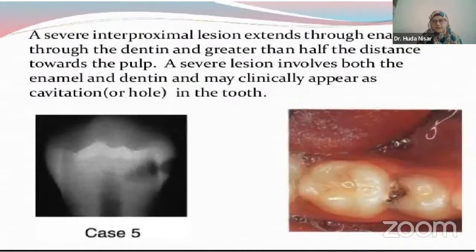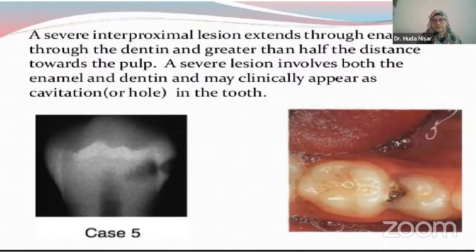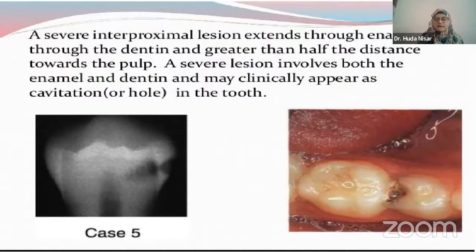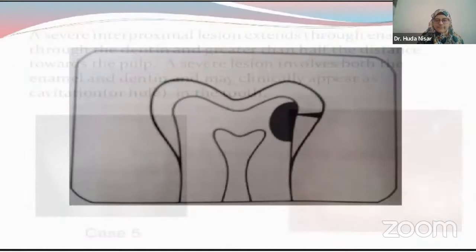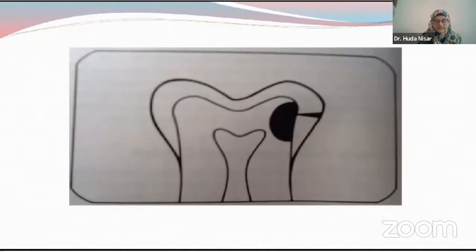A severe interproximal lesion is not very hard to differentiate — you can also differentiate it clinically. But to see to what extent the caries have progressed, that's where the radiograph comes into play and that's when you will have your treatment plan. You can go for excavation and review, and sometimes the tooth is pretty much restorable, but a lot of times it goes into root canal treatment.